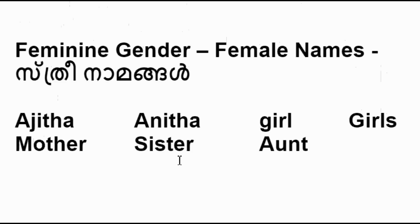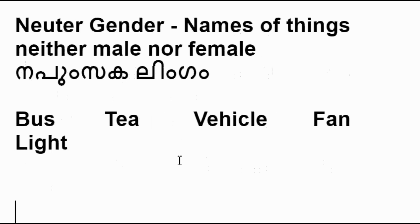Feminine gender refers to female names — for example: Ajita, Anjita, girl, mother, sister, aunt, etc. Neuter gender refers to names of things that are neither male nor female — for example: bus, tea, vehicle, fan, light, etc.